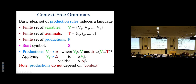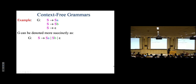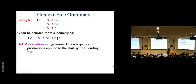The substitution in a context-free grammar does not depend on context — you apply the rule to a variable regardless of what's on either side of it. That's why they're called context-free grammars. Context-sensitive grammars do rely on context, and those describe an even larger class of languages, but we won't get there yet.